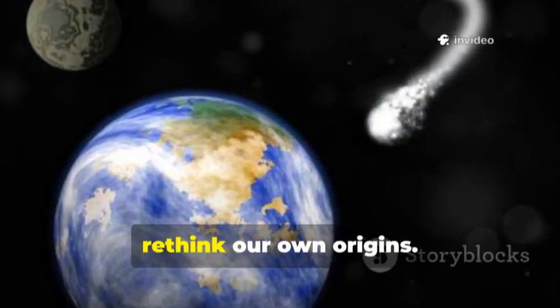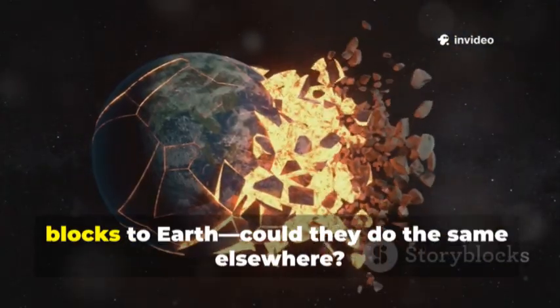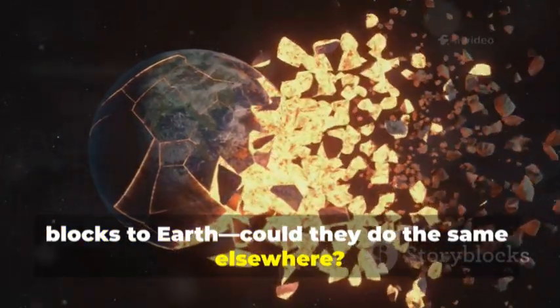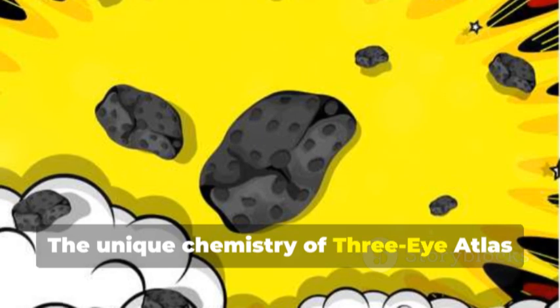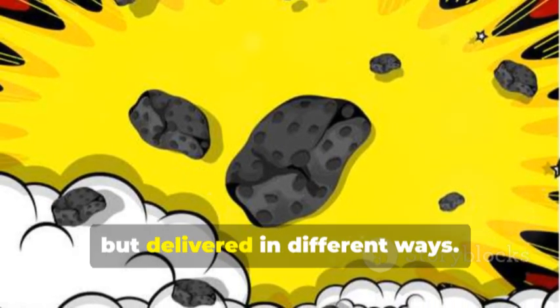Each type tells a different story about its home system. Studying 3I Atlas helped us rethink our own origins. Comets may have delivered life's building blocks to Earth. Could they do the same elsewhere? The unique chemistry of 3I Atlas suggests the ingredients for life might be common, but delivered in different ways.